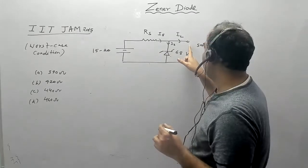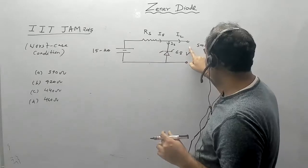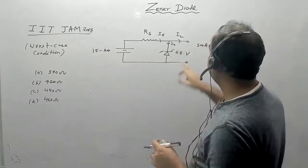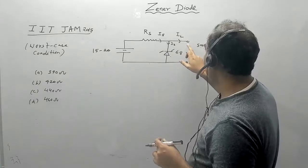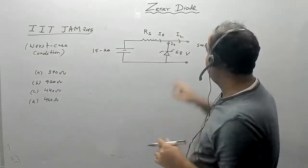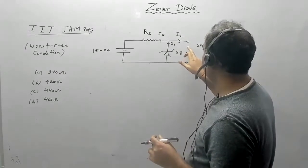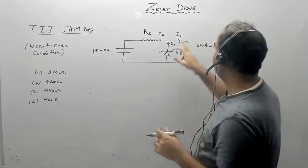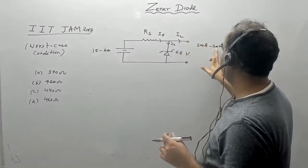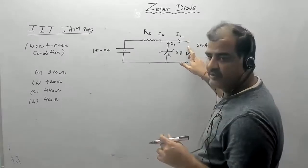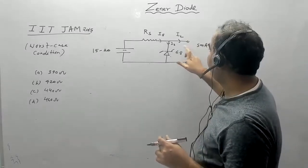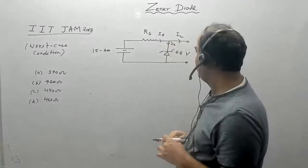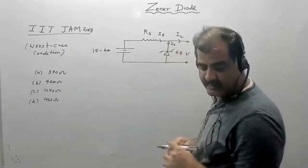In order to keep the diode in breakdown, R_L should be equal to or greater than R_L minimum. As you reduce R_L, I_L will increase. In other words, I_L should not be greater than I_L max of 20 milliampere. If I_L exceeds I_L max or R_L drops below R_L minimum, the diode will come out of the breakdown region.